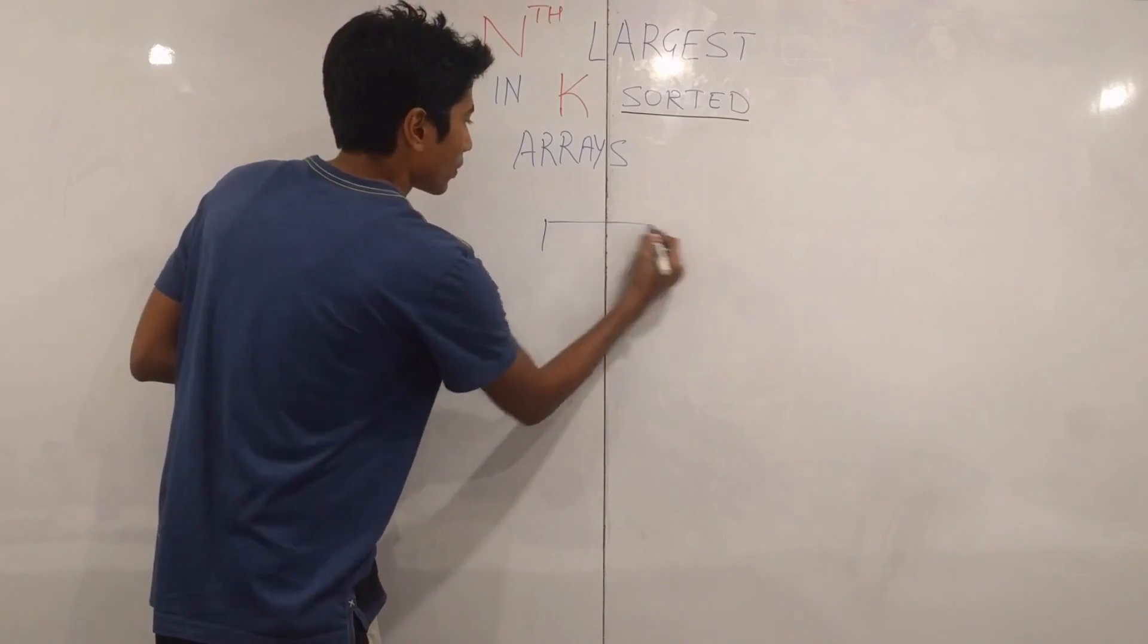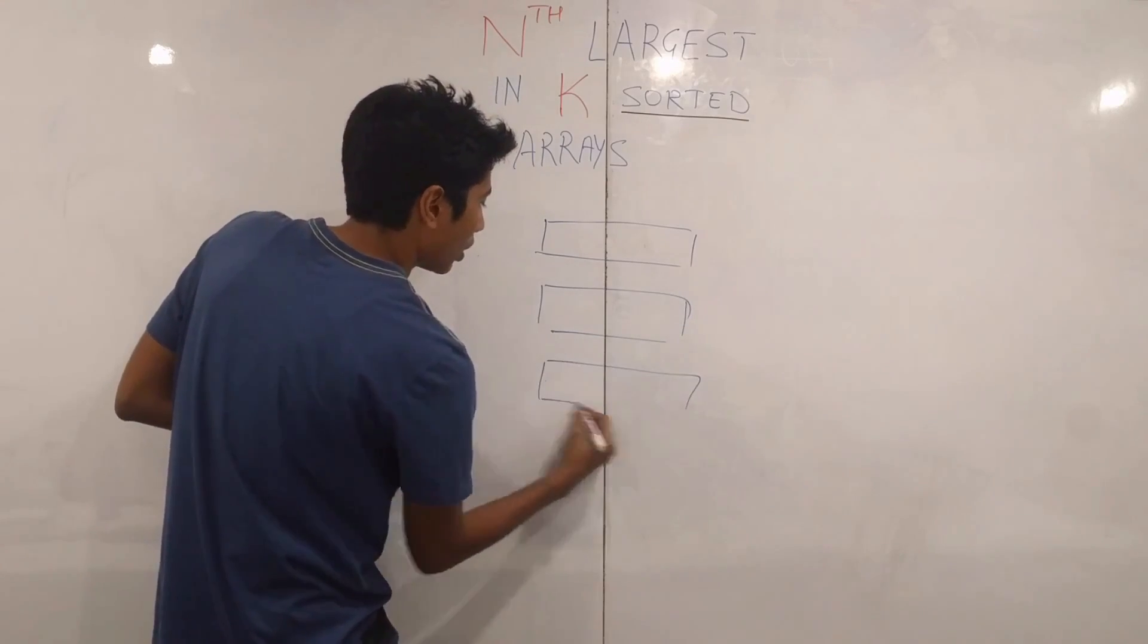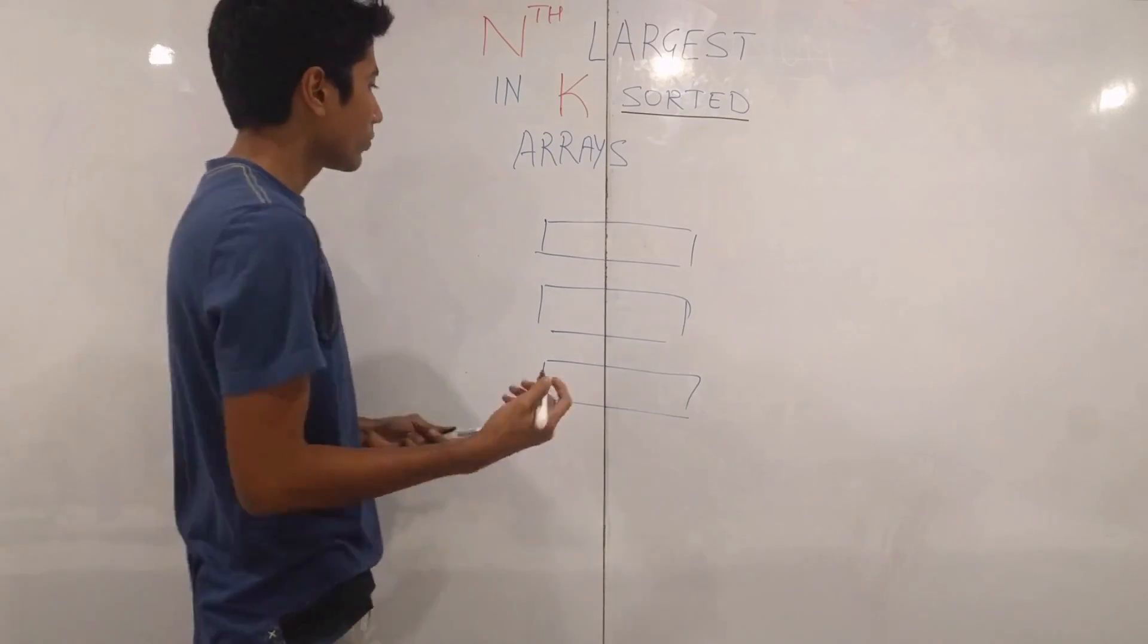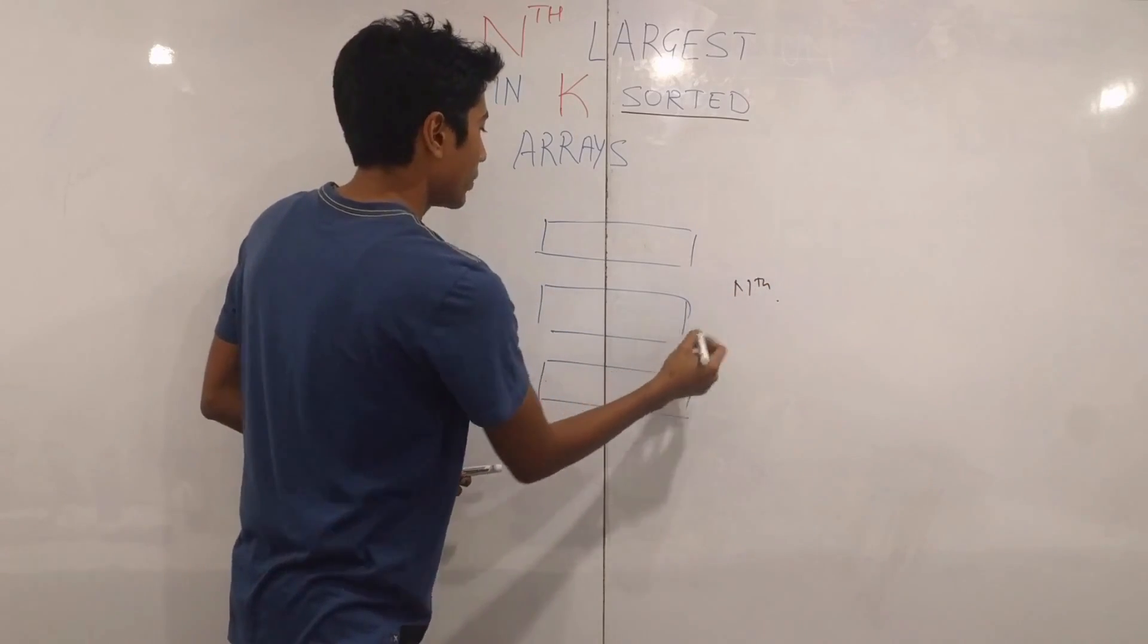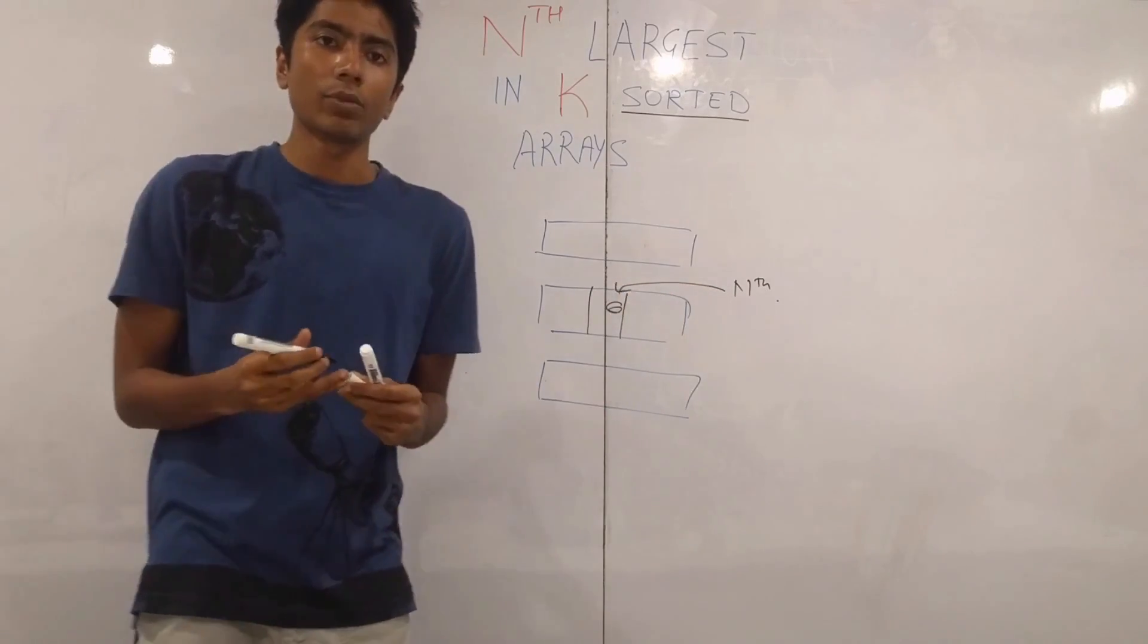We have k arrays and all of them are sorted. What you need to do is you need to find the nth element which might be this element over here in the fastest time possible.